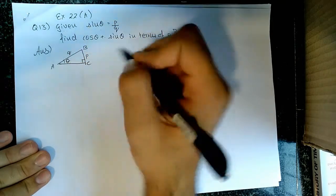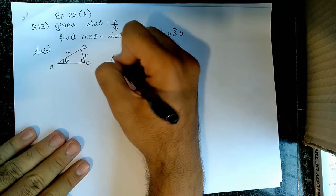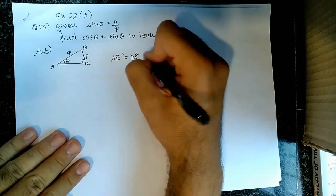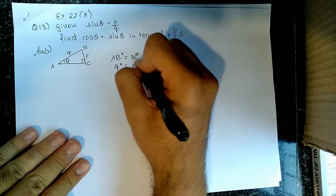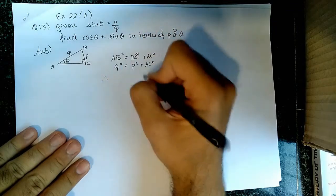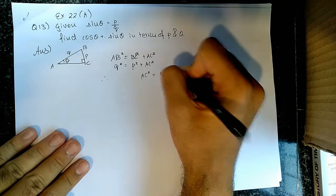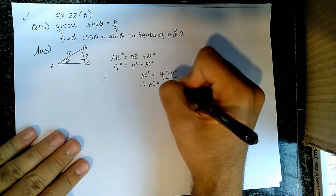Let's name this triangle ABC. Using Pythagoras Theorem, AB square equal to BC square plus AC square. Q square equal to p square plus AC square. Therefore, AC square equal to q square minus p square. Therefore, AC equal to square root of q square minus p square.